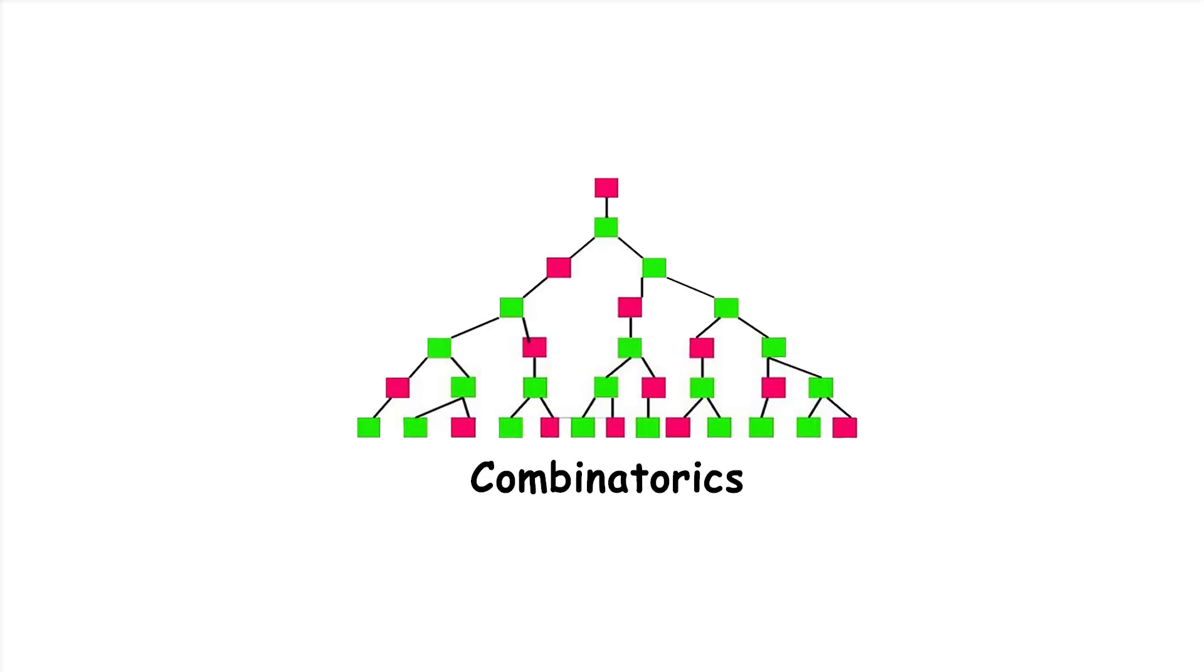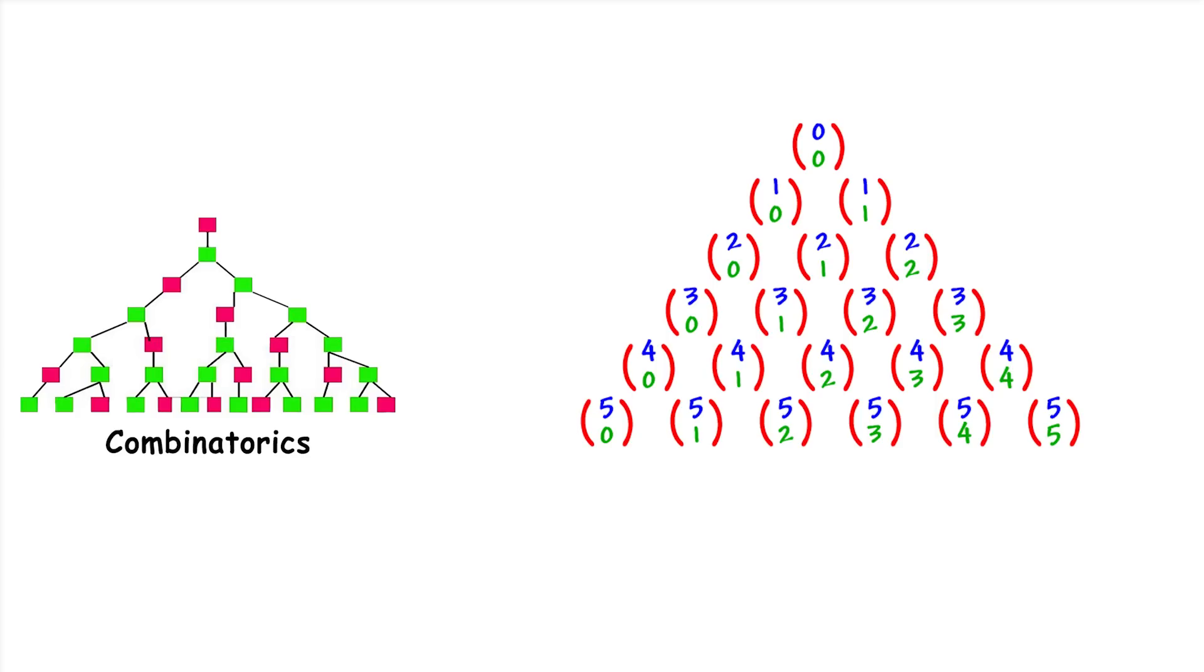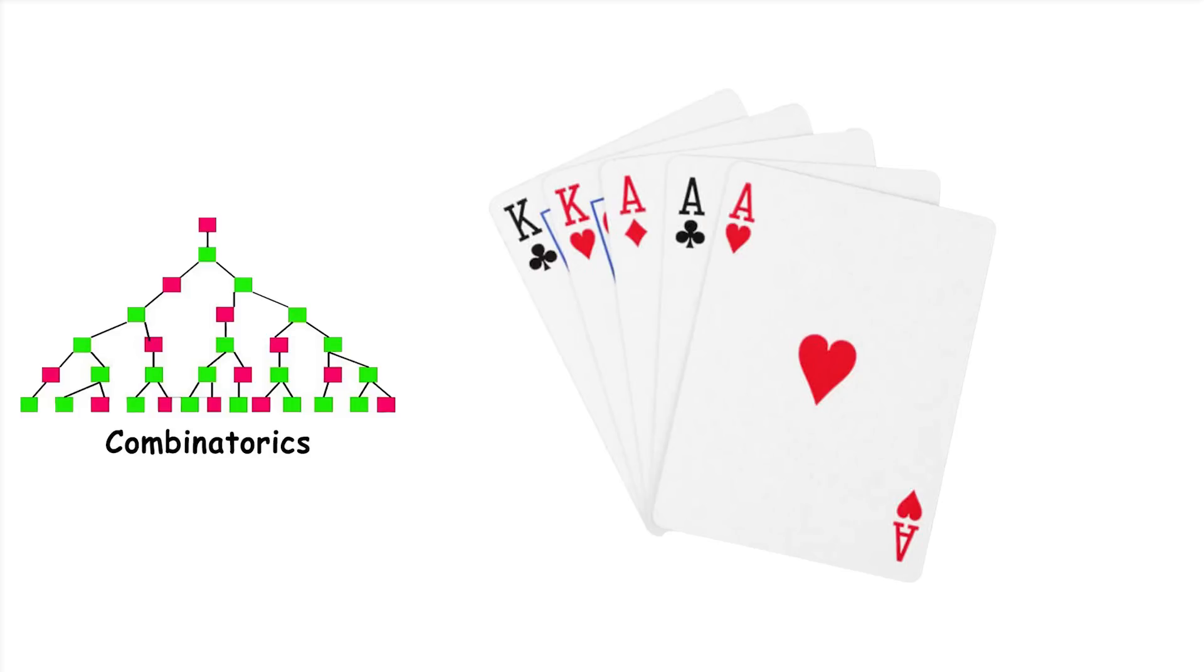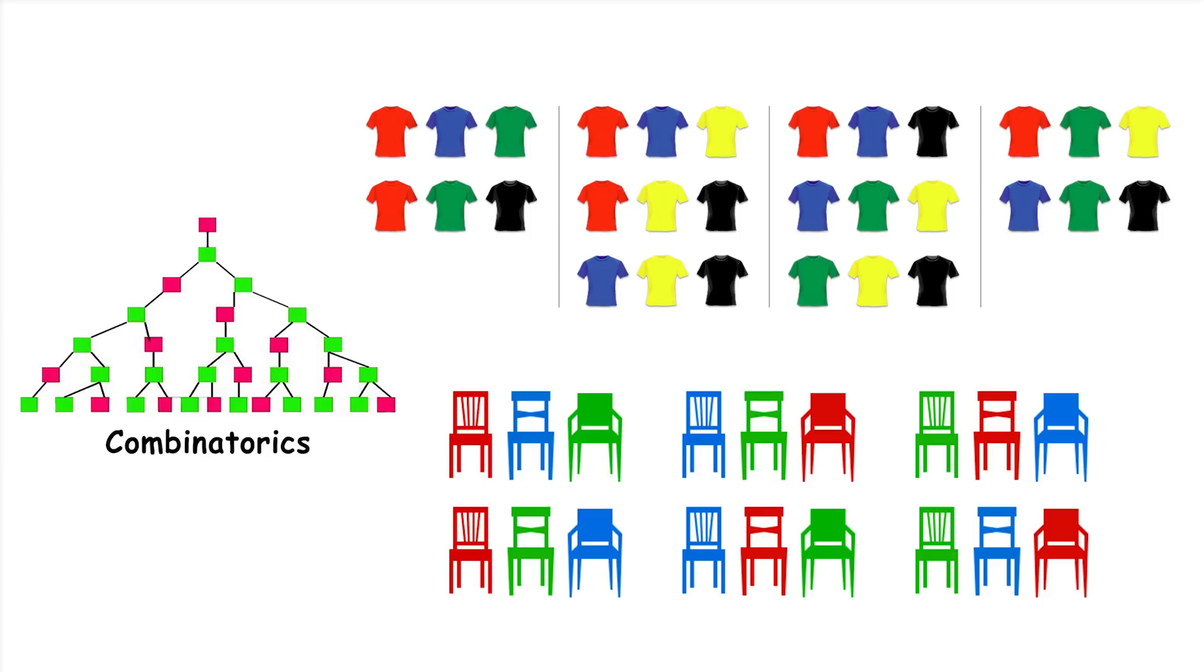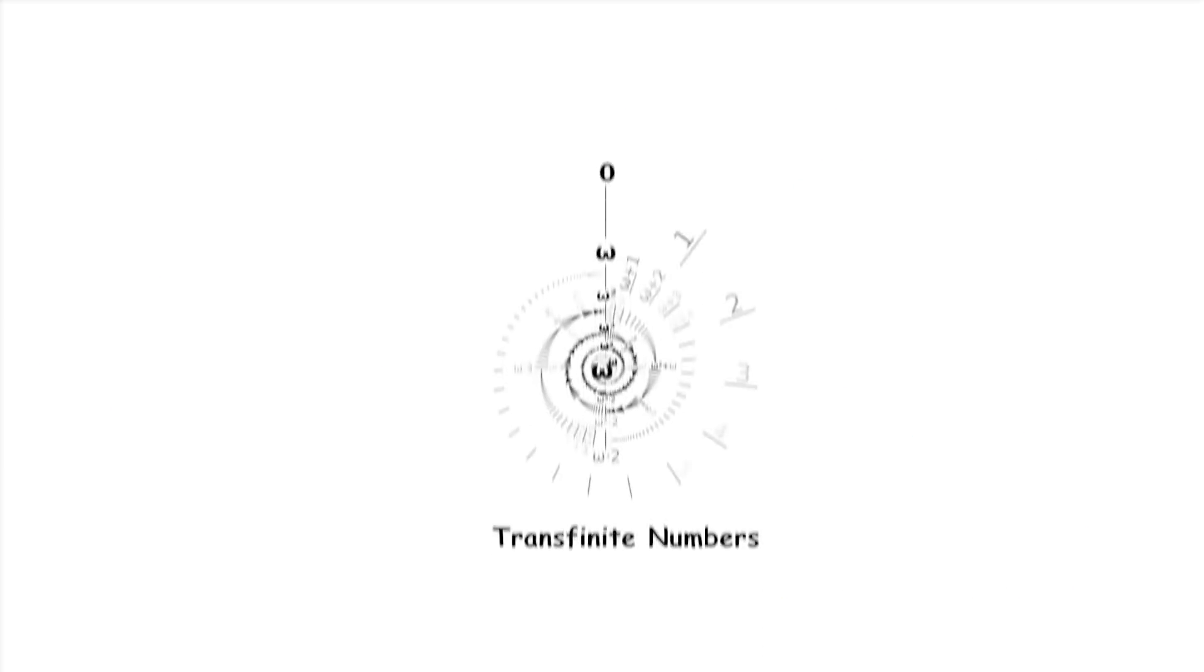Combinatorics. Combinatorics is the study of counting, arranging, and combining objects. It deals with questions like, how many ways can you arrange a deck of cards? Or, how many different combinations of toppings can you have on a pizza? Think of combinatorics as figuring out the different possibilities when you're organizing or selecting things. It's like counting how many different outfits you can make with a certain number of shirts and pants.